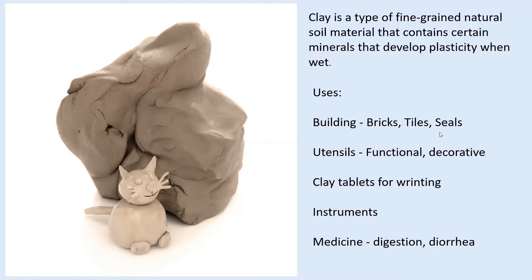It becomes very solid and stops absorbing water. Clay has had a variety of uses over time. The first thing I think of is building — quite a lot of early homes, and some homes still today, are built using clay. You can make bricks from clay, and cob houses are made using a mixture of clay, straw, and something else. Also tiles for houses or floors, and as a seal since fired clay doesn't absorb water.